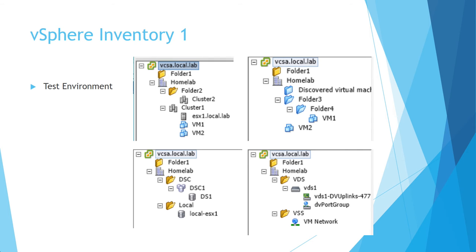The vSphere inventory tree is quite complex, partly because it grew historically and new types of resources had to be fitted into it. Most of you who used the vSphere classical client will know this view. There are four types you can look at. Top left is what VMware calls the host cluster view — the yellow folders — where you see data centers, clusters, and hypervisors. Top right is the VM template view, where you can set your VMs in specific folders and apply permissions to delegate parts of your environment to specific user groups.